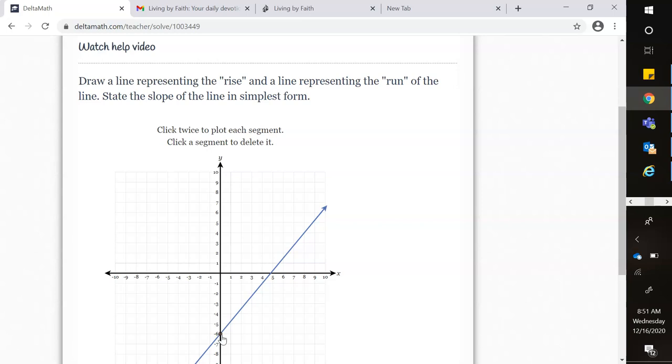Then I'm going to drag it up because I'm doing my rise. I noticed that I really want to put my second dot here, but I can't follow the blue line. I've got to count my rise, so I've got to click here and end that segment.